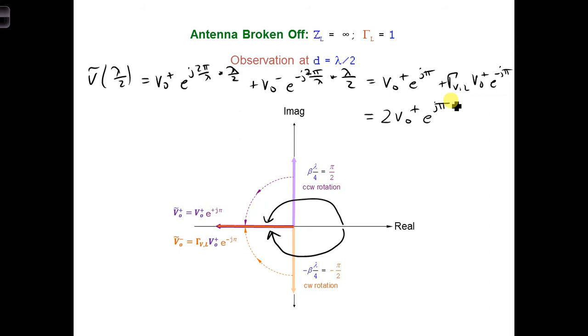So we get the same magnitude as we did at d equals 0. The magnitude is 2 v naught plus. You might imagine that as we move even further away from the load, the phasors continue to spin around the complex plane, and they alternate between being aligned and anti-parallel, so in and out of phase. And that's true.